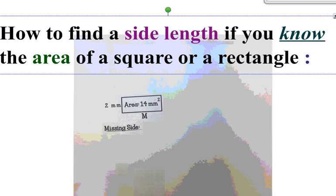Here's another example, finding a side length. If you know the area of a square or rectangle, the kids learned that they can represent square units by putting a 2 up at the top. So in this little rectangle, you have 14 square millimeters. You know that equals the area already, and you know that you have a side which is 2.